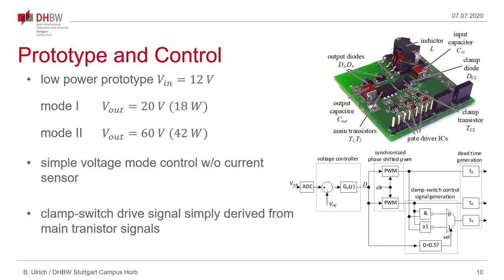The interesting thing is we just need a very simple control to achieve this zero voltage switching. A simple voltage mode controller is used and the clamp switch signal is derived directly from the main transistor drive signals using some logic circuit without any current sensing. Therefore it's possible to have a low complexity zero voltage switching without the need for a current sensor. A basic scheme for control is shown here on the right.